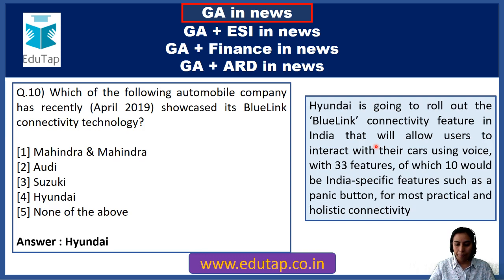Question 30: The UAE has conferred its highest civilian award, the Order of Zayed, on whom? This is an easy question — Prime Minister Narendra Modi has been awarded the Order of Zayed. He has been awarded for playing a pivotal role in giving a boost to the bilateral strategic ties between India and UAE.